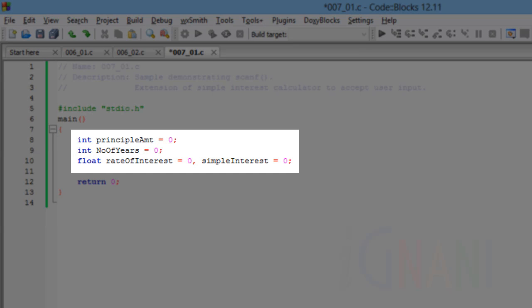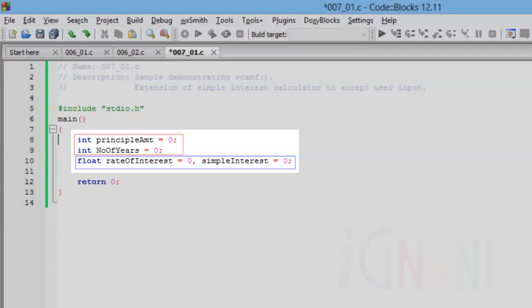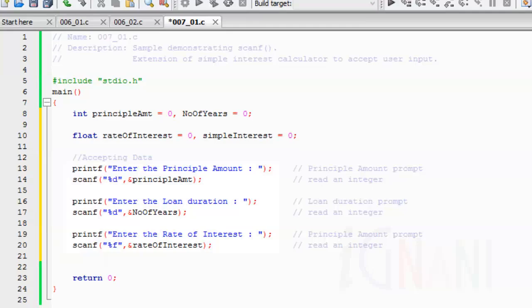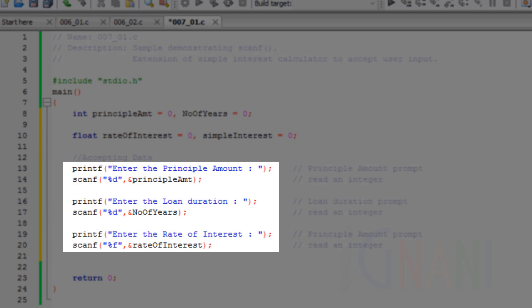Notice the changes in this code compared to the earlier version. All the 4 variables are declared and initialized together. Two variables are of type integer and the remaining 2 are of type float. The lines 8 and 9 could have also been combined in this manner. The lines from 13 to 20 prompts the user to enter data and also reads and stores the data into its respective variables.